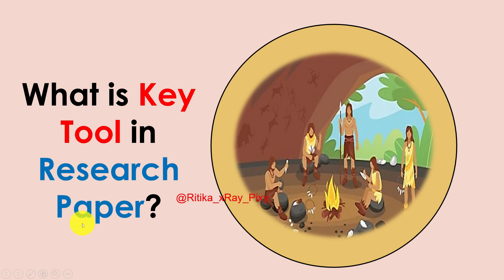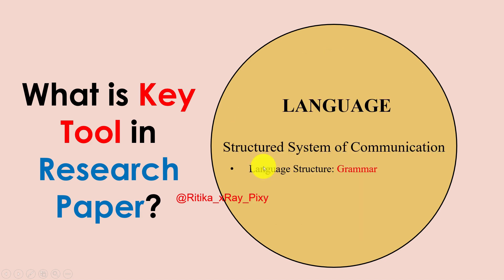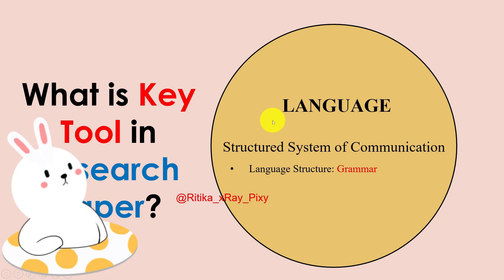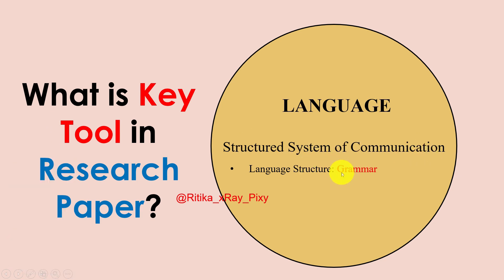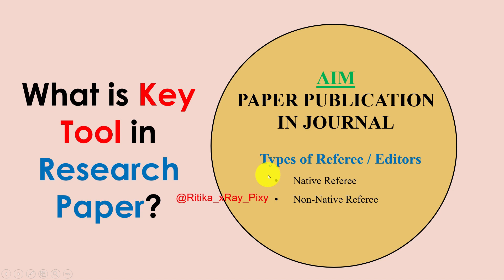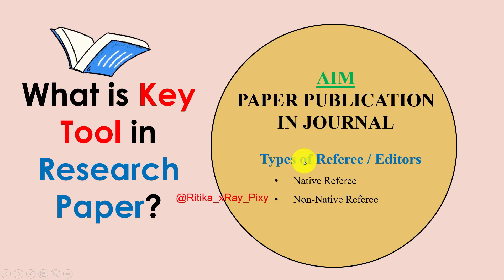The key tool used in research paper writing is language. During the stone age, humans communicated using signs, signals, and pictures on walls. Today we use language for communication — a structured system consisting of written symbols and sounds used by people. Language is considered the key tool in research paper writing.